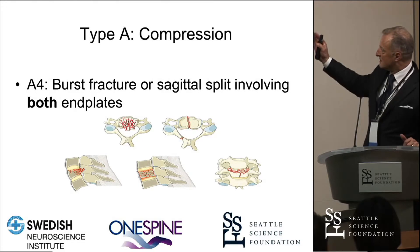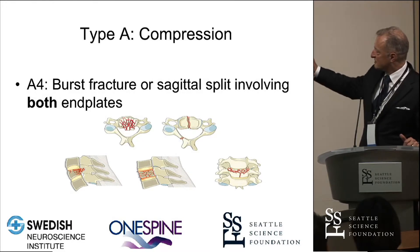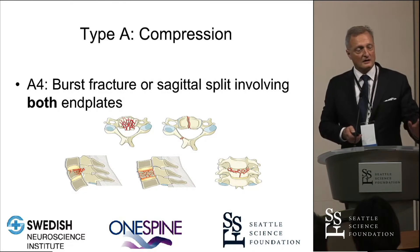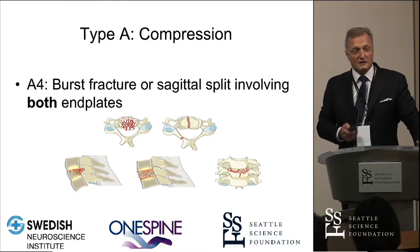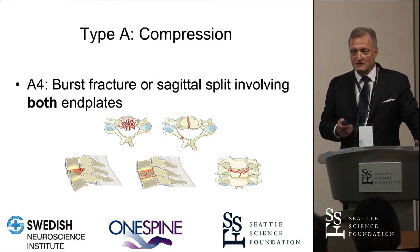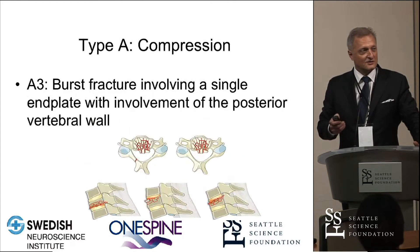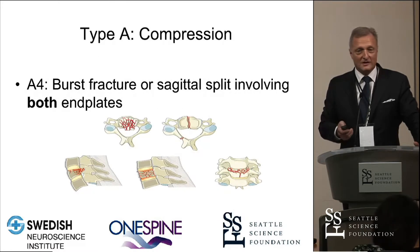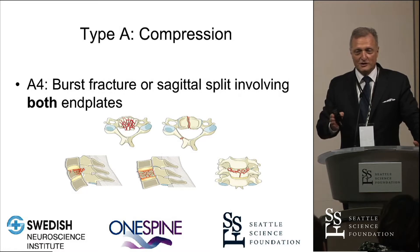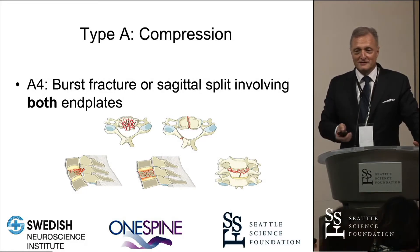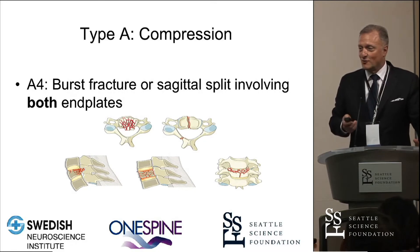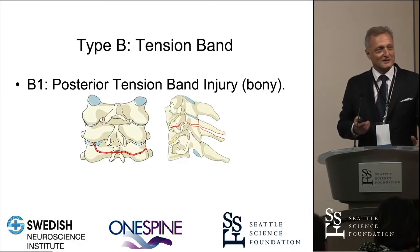A4s are burst fractures that have a saddle split or involve both end plates — a subtle but important differentiation that we're still trying to validate. Differentiating A3s and A4s remains something we're very interested in. In the U.S., we're actually pretty good at differentiating A3s and 4s. In Europe, literally everything is an A4 almost, and I'm still not sure why that is, but there are therapeutic consequences to this.